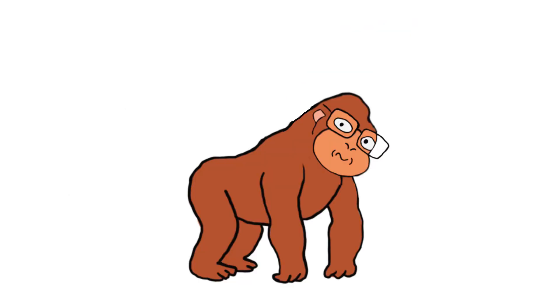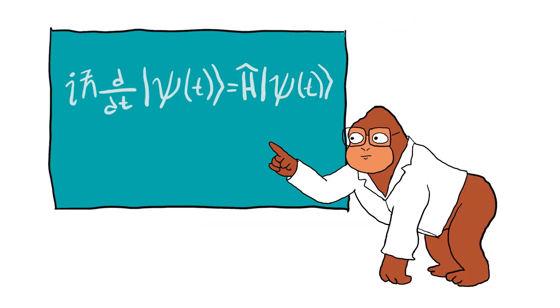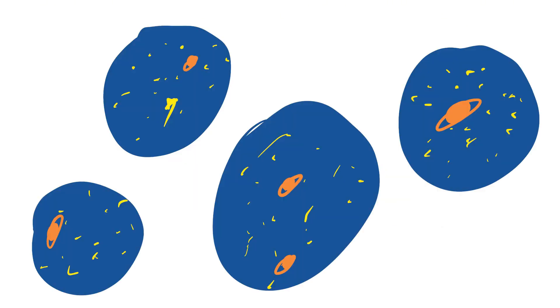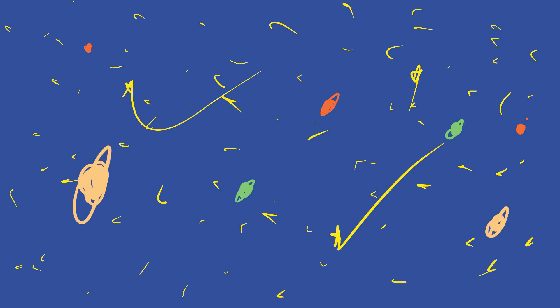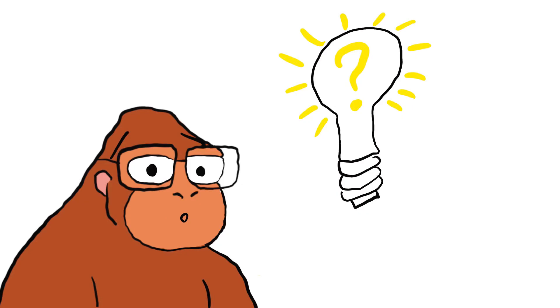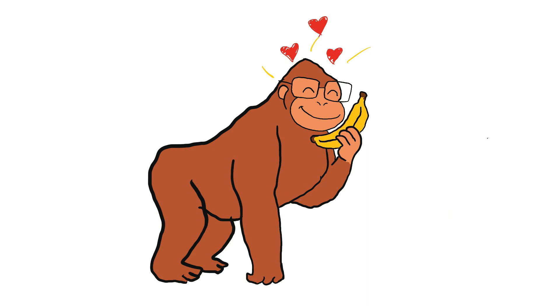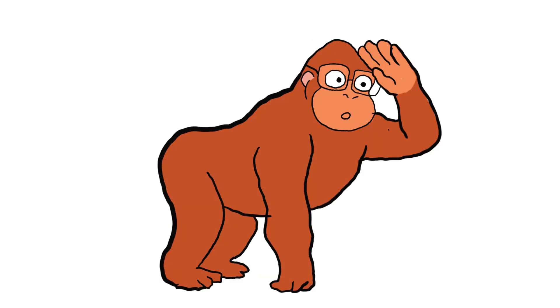This is where things get complicated, monkey. When scientists talk about parallel universes, they mean that there may be other universes besides ours. These universes may be very similar to ours, or they may be completely different. In some, monkey might still love bananas. In others, bananas might not exist at all.